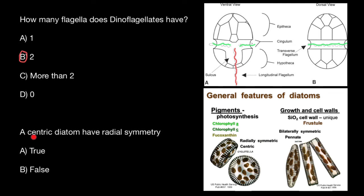So the statement, a centric diatom has radial symmetry, is a true statement. Answer A. And this is all for today. Subscribe and see you in the next video. Goodbye.